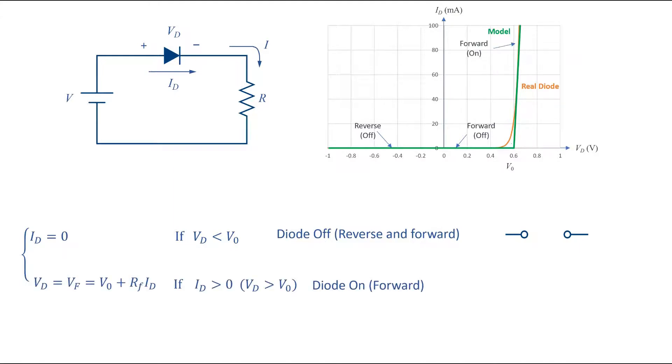If the voltage is more than V0, there is a significant current in the diode and the line can be shown by this equation.